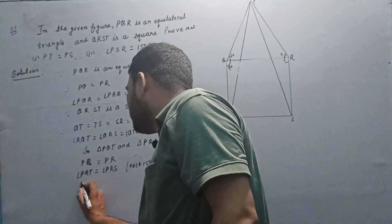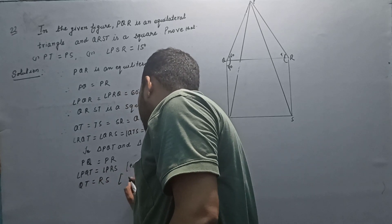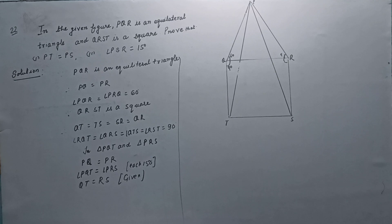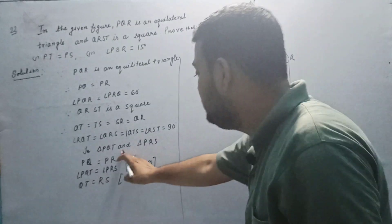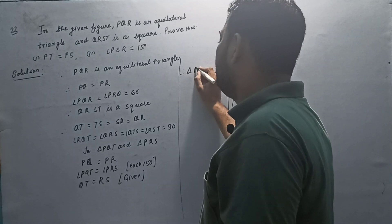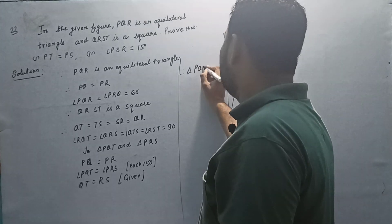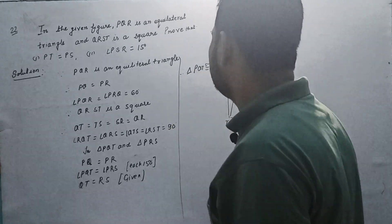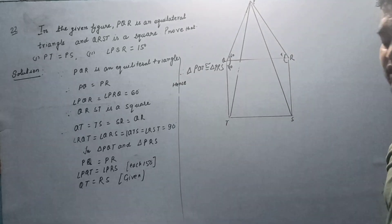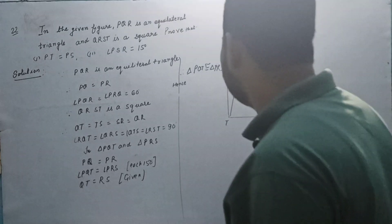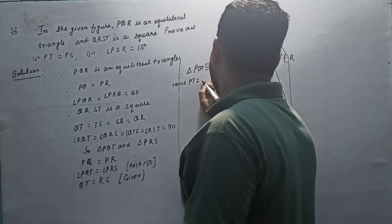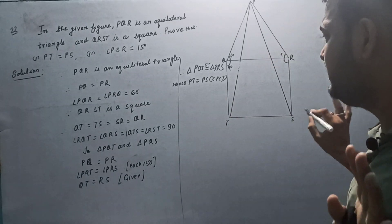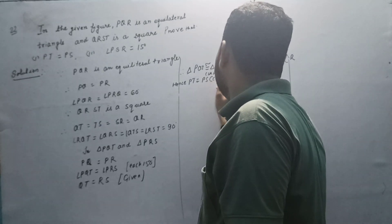Thirdly, QT equal RS — because they are sides of the square. So we have three proofs. When three proofs are found in two triangles, the triangles are congruent. So triangle PQT is congruent to triangle PRS by SAS congruency criteria. Hence, PT equal PS by CPCT — corresponding parts of congruent triangles.